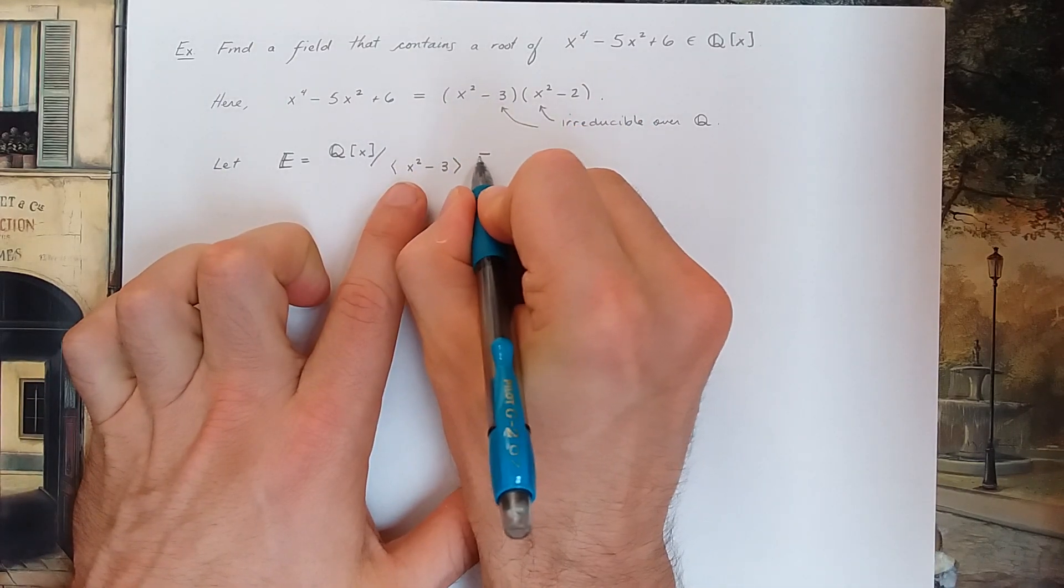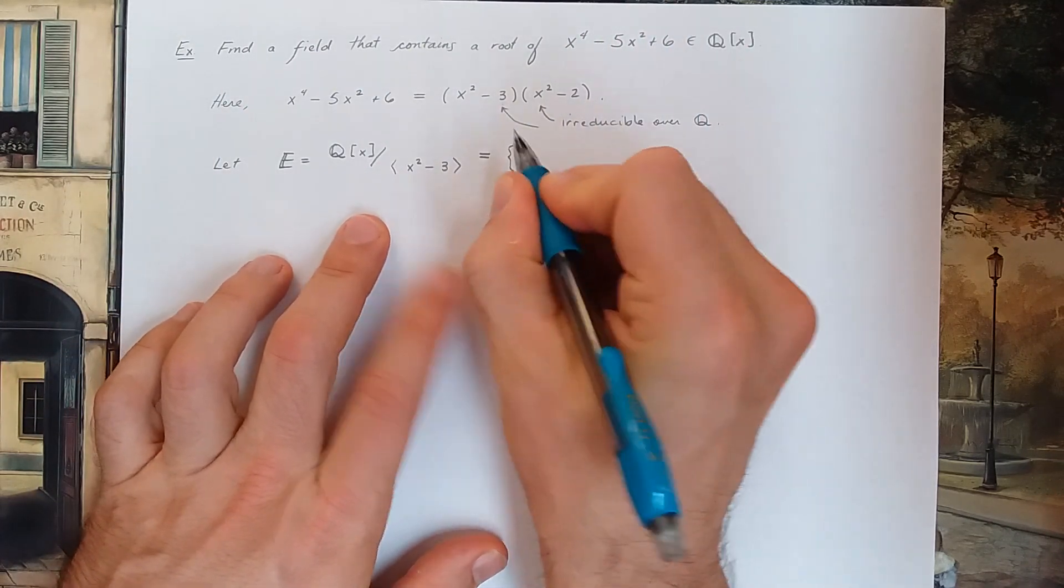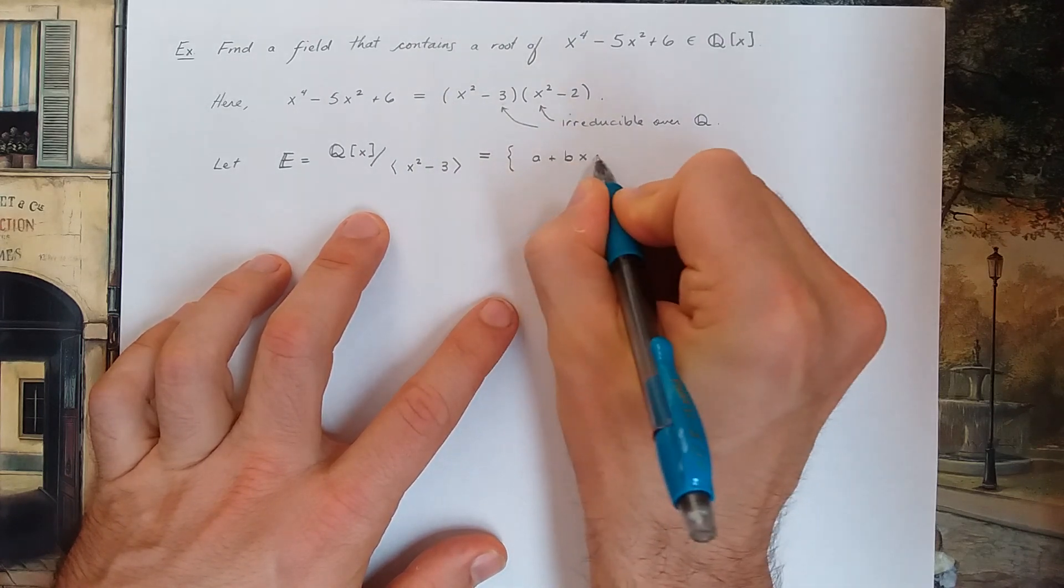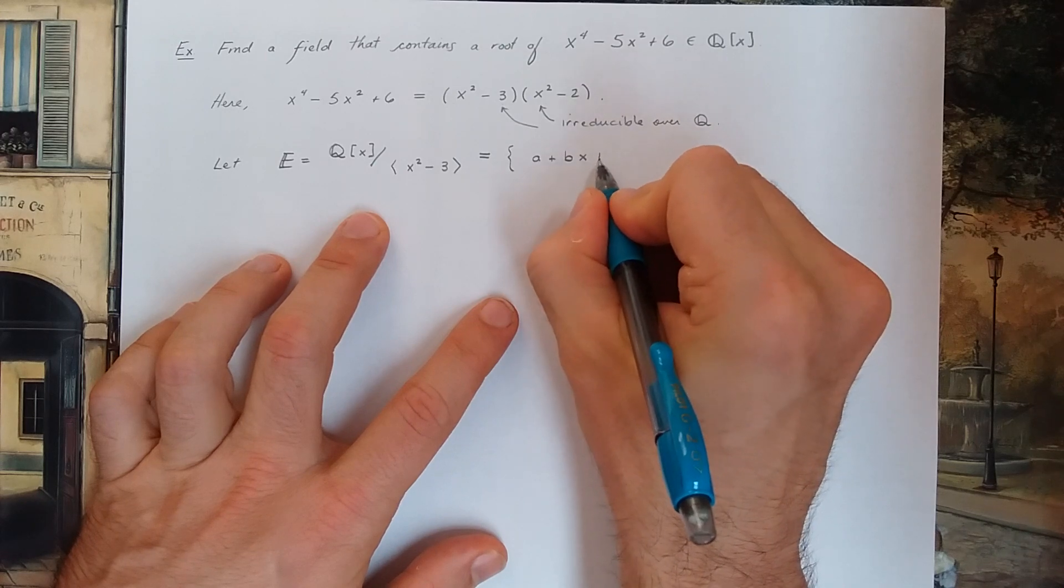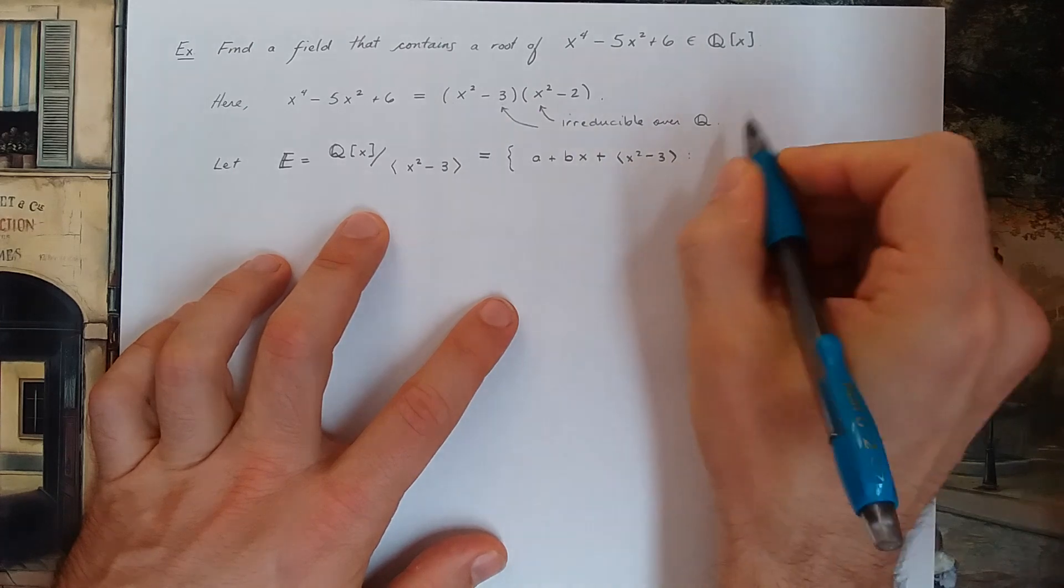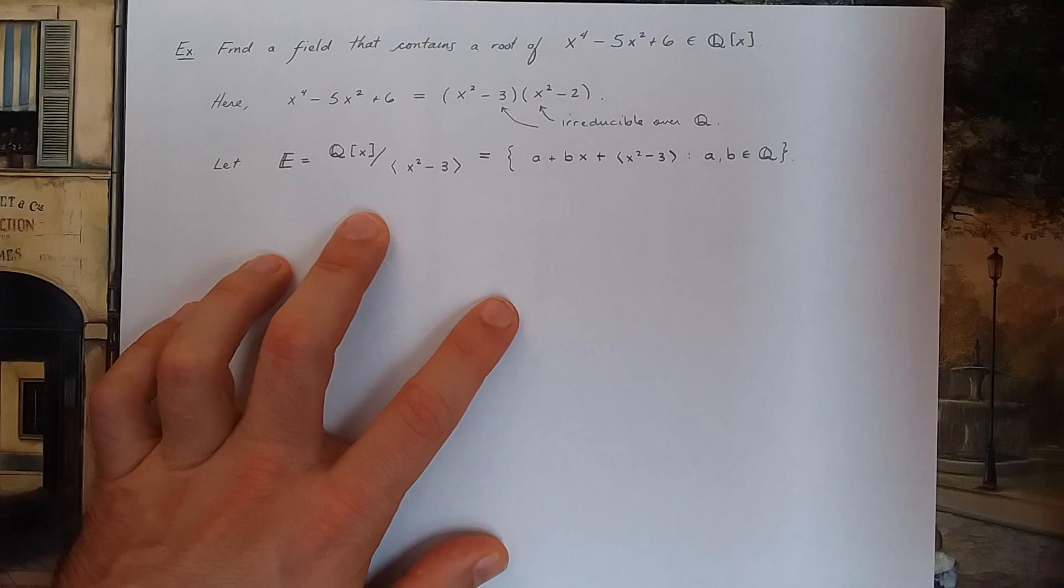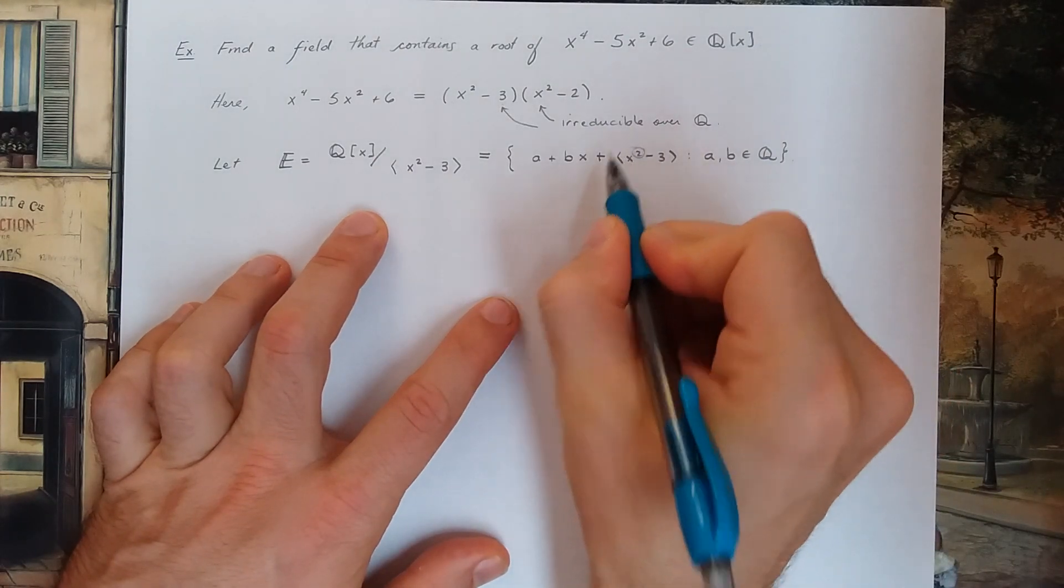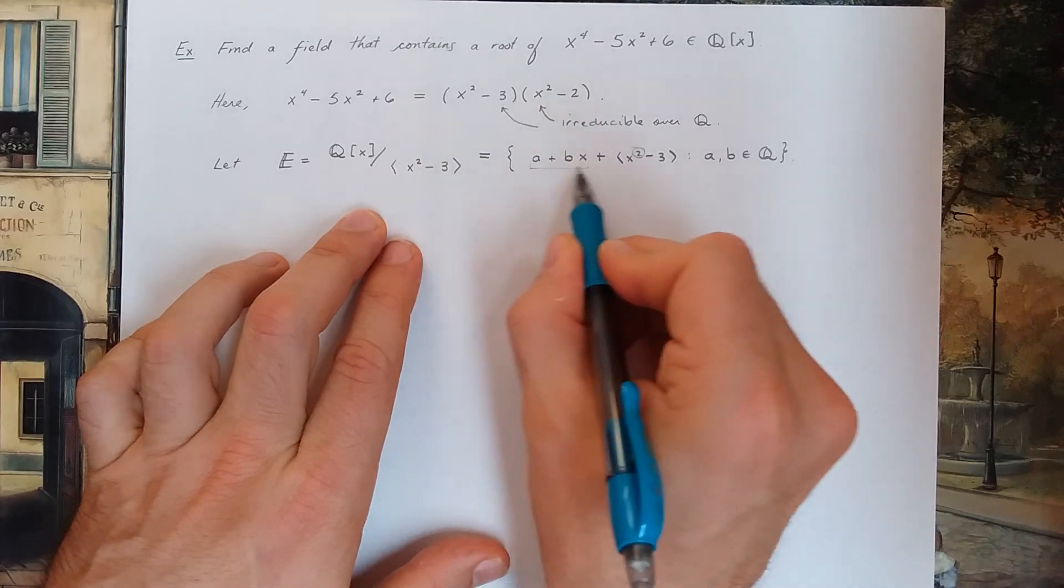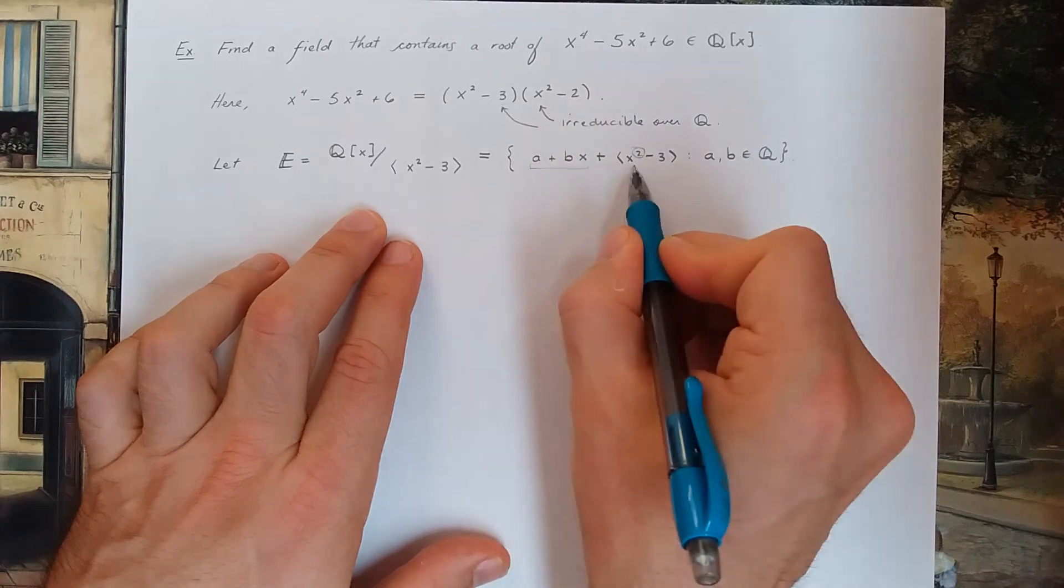As we saw in the proof of the fundamental theorem of field theory, E contains elements of the form a plus bx, plus my ideal, where a and b are rationals. We saw in the proof that since this is a degree 2 polynomial, the elements in the factor ring contain all polynomials of degree less than or equal to 1 plus your ideal.